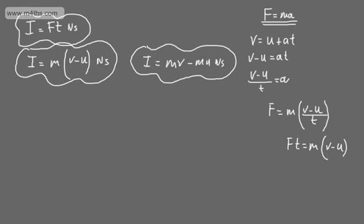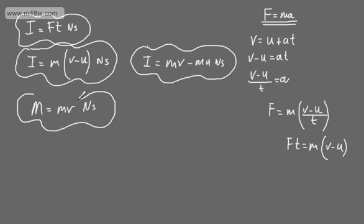Let's now look at the concept of momentum. The word momentum is used in everyday life without any real understanding. If we take a particle — an object of mass m and velocity v — we can say that its momentum is the product of the two. So we'll define momentum to be capital M, equal to lowercase m multiplied by v. Momentum is a vector quantity, as we have velocity. The units are newton seconds.